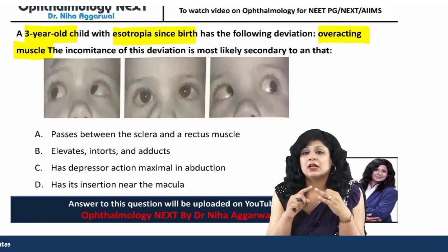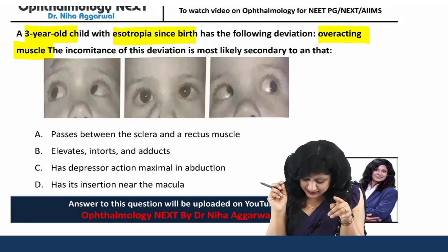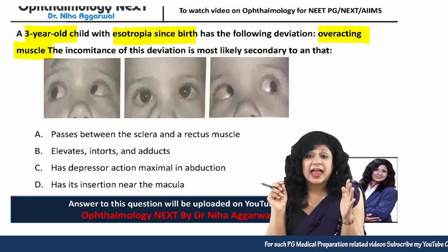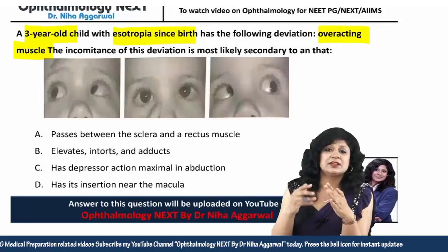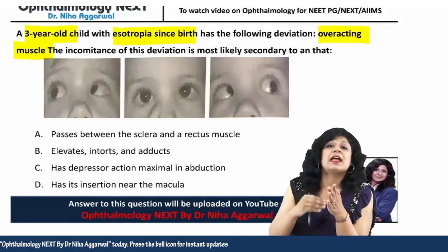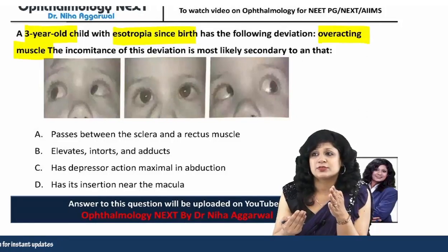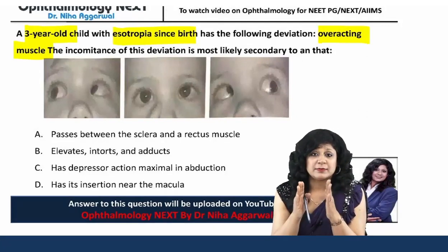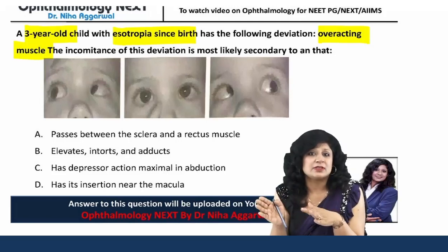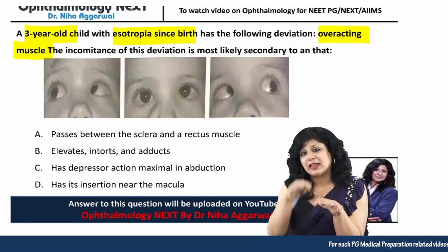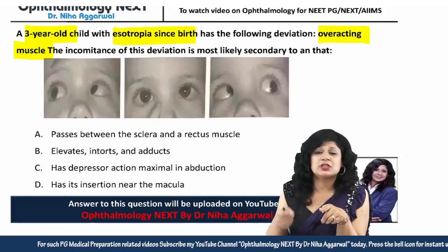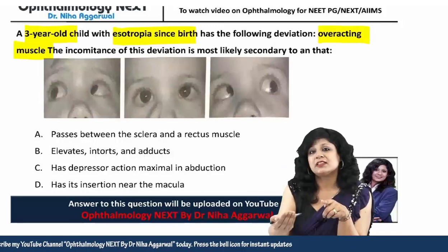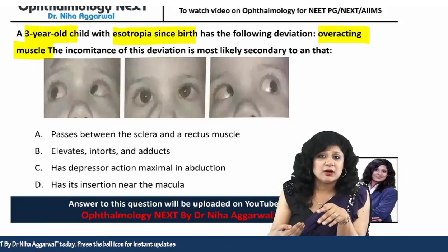When thinking about esotropia, the deviation here is incomitant. Incomitant means there is variation — an increase in the deviation in certain positions. Squints which are comitant have a fixed amount of deviation, but they can be vertically incomitant, showing increased deviation in up gaze or down gaze.